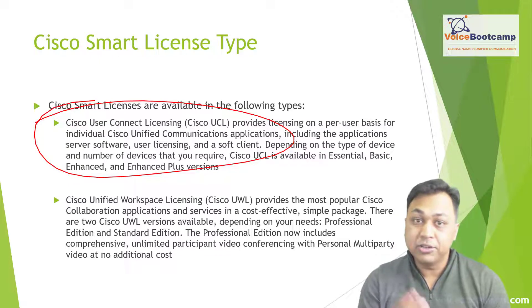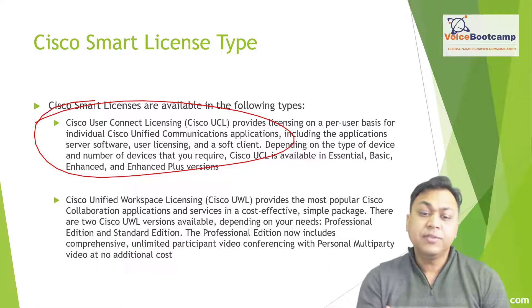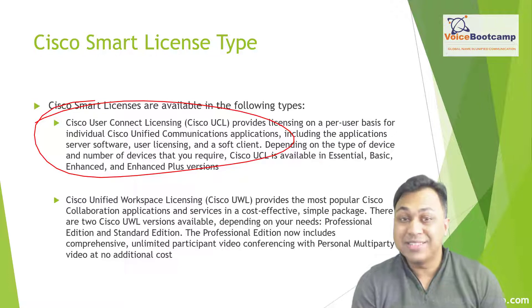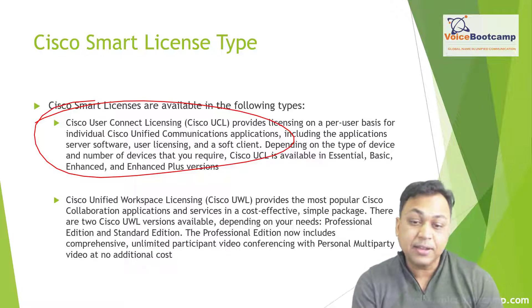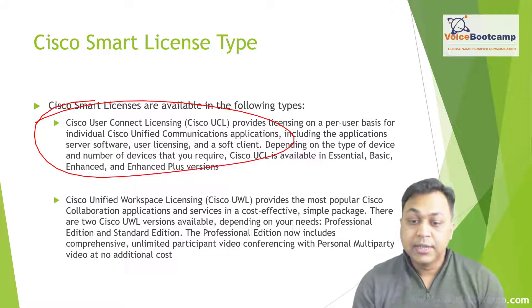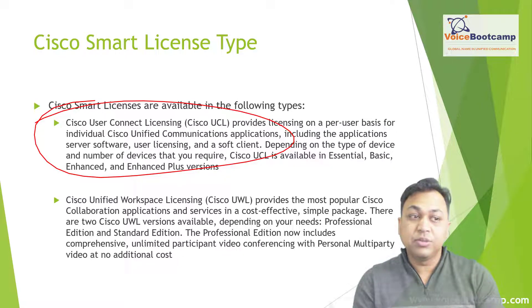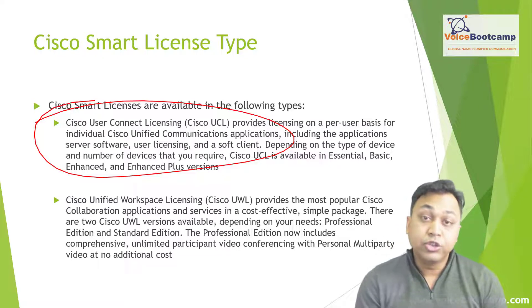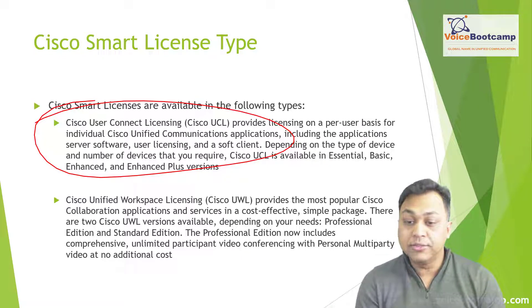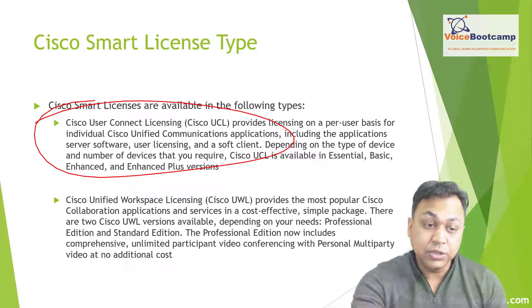UCL comes with up to four different flavors of licensing that you can purchase depending on the type of endpoint or devices you want to use. Then you have Cisco Unified Workspace License (CUWL), which provides the most popular Cisco collaboration applications and services in a cost-effective, simple package. With one single license you can use all the most commonly used products and features. Two CUWL license versions are available depending on your needs.